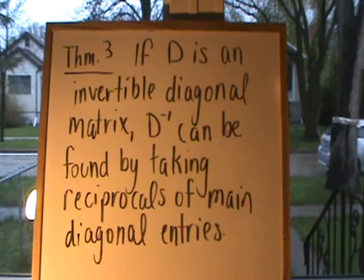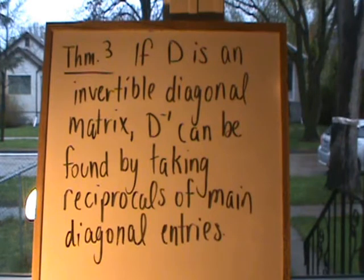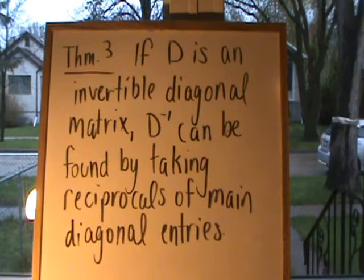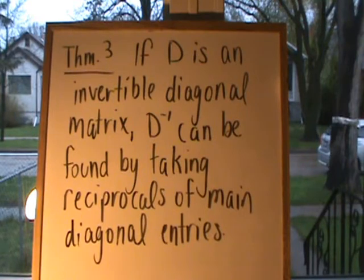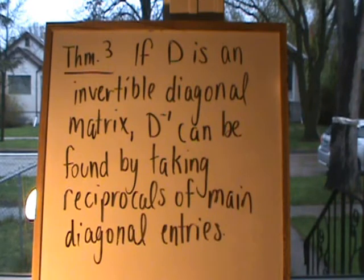Here's a handy theorem for working with diagonal matrices. First, scan the main diagonal to make sure there aren't any zeros — this means your matrix is going to be invertible. If you know your diagonal matrix is invertible, you can find its inverse by taking reciprocals of all of the entries on the main diagonal.